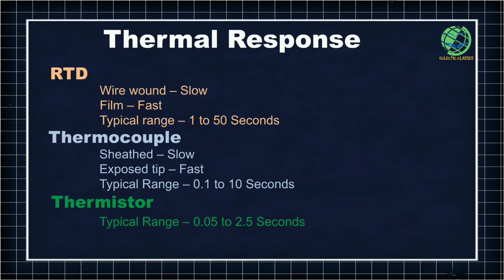Depending on construction type, wire-wound RTDs are slow while film RTDs are fast. Thermocouples can be of two types: sheathed or exposed tip. With an exposed tip, the junction is heated directly from the temperature source. In a sheathed thermocouple, the tip is inside the sheath, so it gets heated only after the outer sheath heats up — meaning sheathed thermocouples have a slower thermal response, while exposed-tip thermocouples have a faster thermal response.